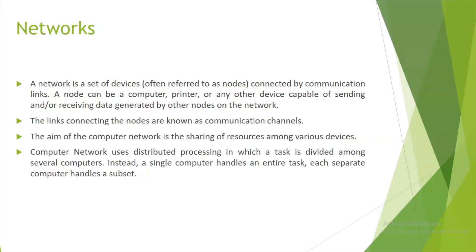The aim of a computer network is to share resources among various devices or nodes. Computer networks use distributed processing, in which a task is divided among several computers. Instead of a single computer handling an entire task, each separate computer handles a subset.